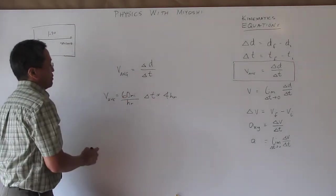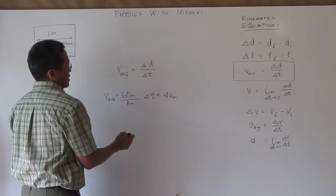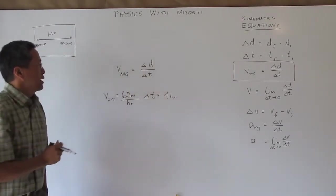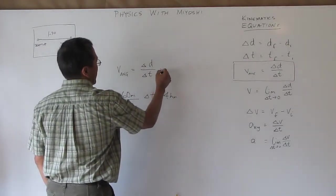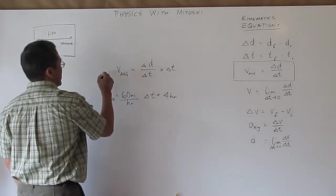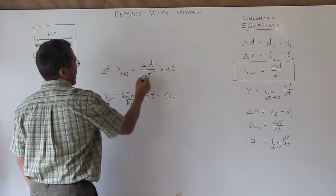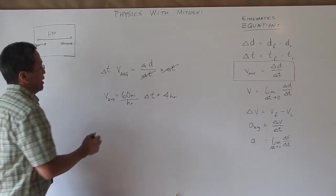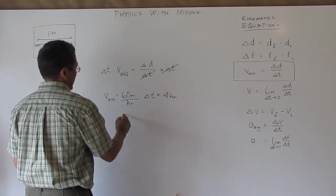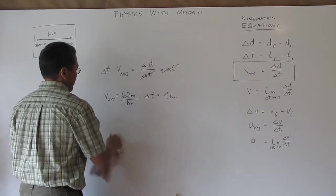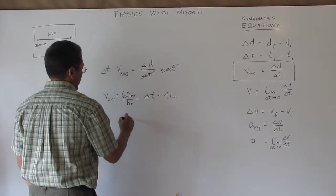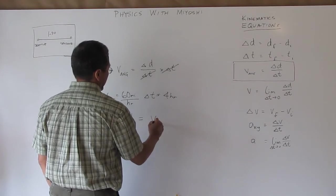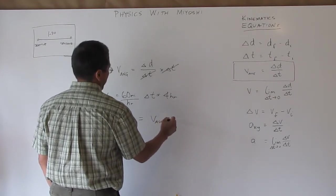Well I could do the same thing as I did before. I could just rearrange my equation and this time I'll do the rearranging here with my symbols and I will just multiply both sides by delta t and that makes that cancel each other out or divide out and so I have now my delta d is v average times delta t.